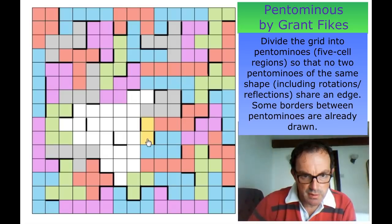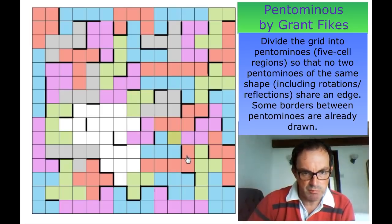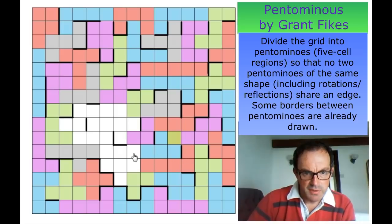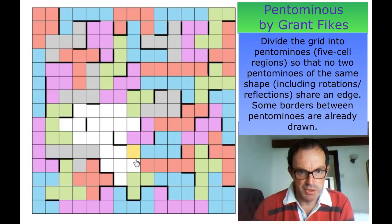These squares and this square are part of the same pentomino — let's highlight that, make those purple. These three squares are part of the same pentomino — we'll make those green. This square is interesting: what happens if this square is not part of this purple region?